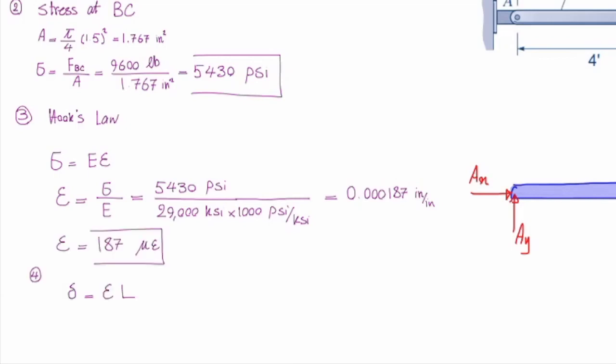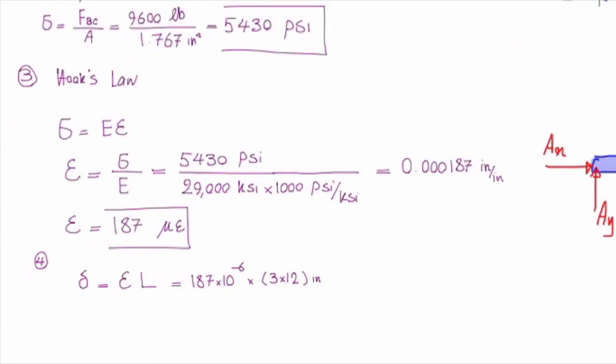And in the very last step, the deformation would be epsilon times L. Again here, that is in feet. And I need to convert that into inches. So strain is 187 times 10 to the minus 6. And length is 3 feet. I convert that into inches. That gives me 36 inches. And the final answer would be 0.00674 inch.